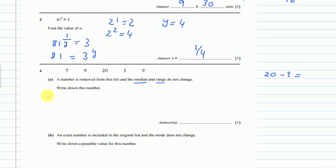So the number which is removed cannot be 20 or 3. Otherwise, the range will be different. So the numbers, we cannot, it cannot be 20. It cannot be 3. And they also said the median didn't change. The median is the middle number. If we arrange from small to large. So 3, 7, 9, 9, 20. So the median in this is 9, the middle number. So when they took out the number, the median was still 9.